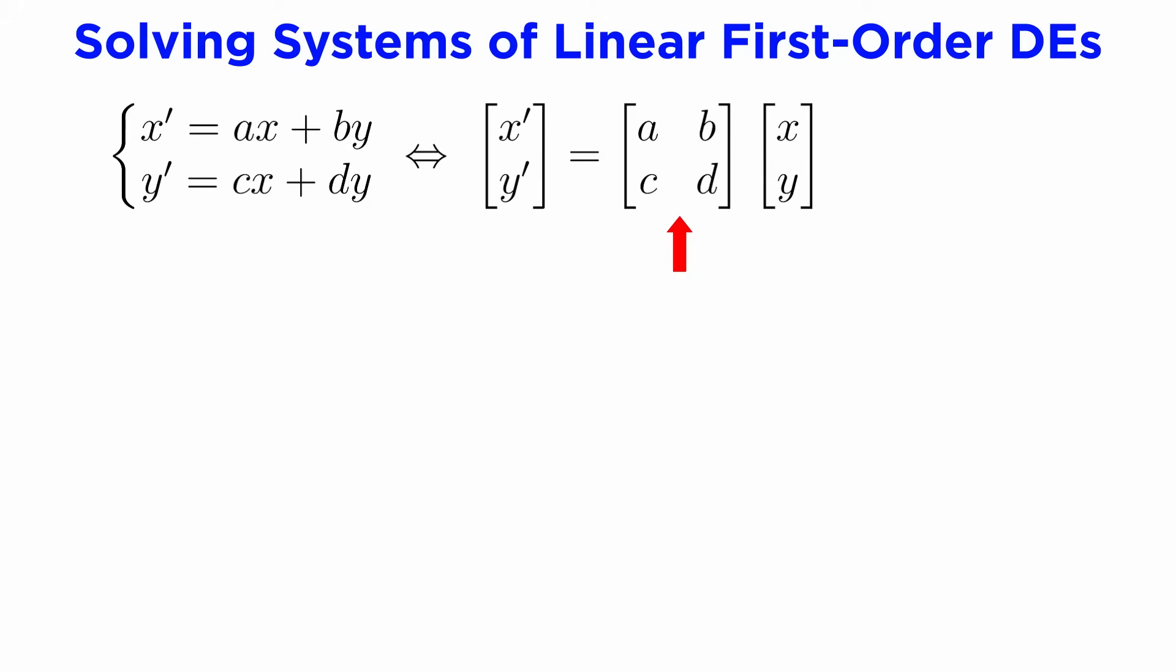We can also pack the coefficients a, b, c, and d into a 2 by 2 matrix. If we call the vector x, this time using a bold or underlined symbol to indicate that this is a vector quantity, we can write down a compact form of this system. x prime equals capital A times x, where capital A is the matrix ABCD.